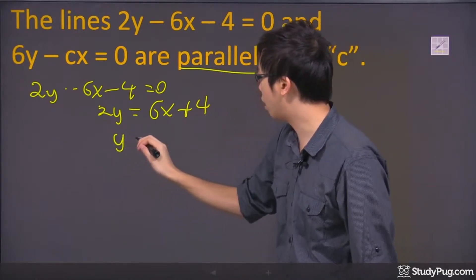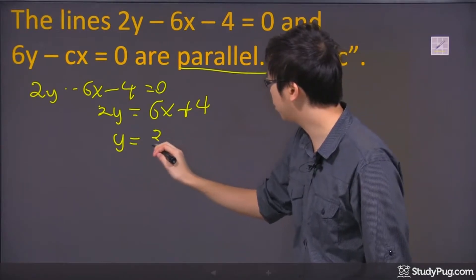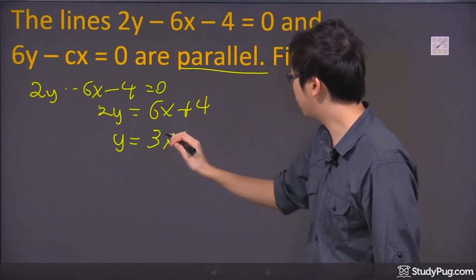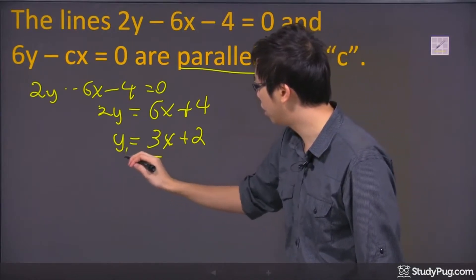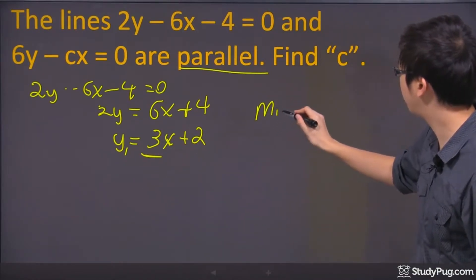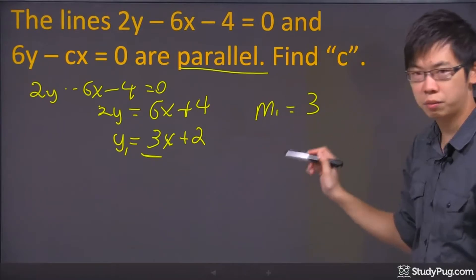Now, to solve for y, just divide everything by 2. So 6 divided by 2 is 3, 4 divided by 2 is just 2 right here. So you get the first slope right there. If this is my equation number 1, my slope of the first one will be 3.